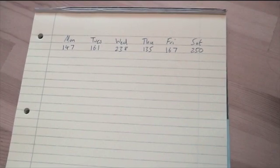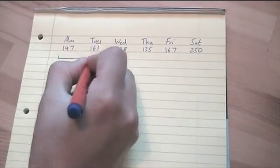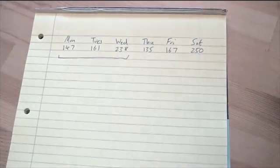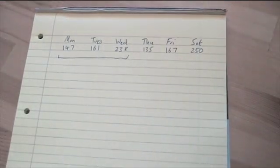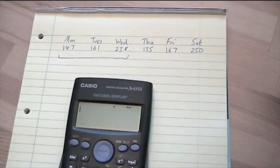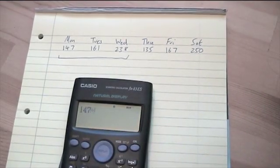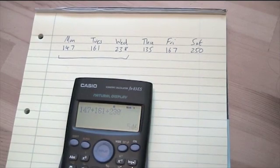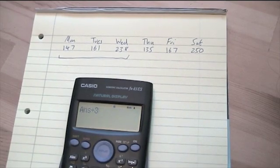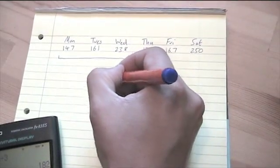First thing you do is take the first three values. In this case, 147, 161, and 238. We're going to do the average, so we're going to add them up and then divide by three. So the first moving average is 182.